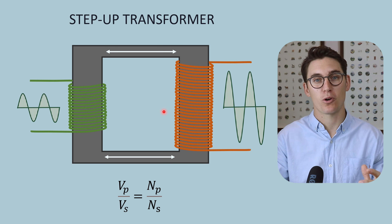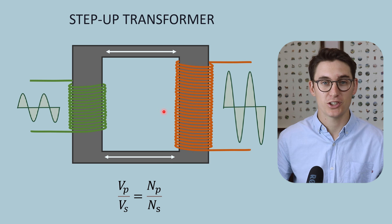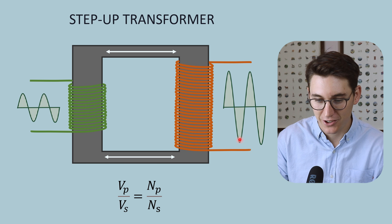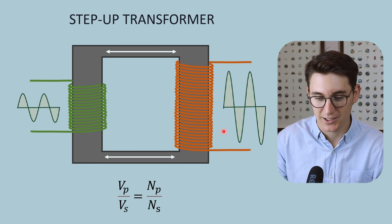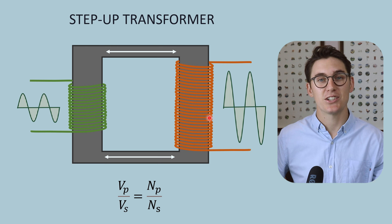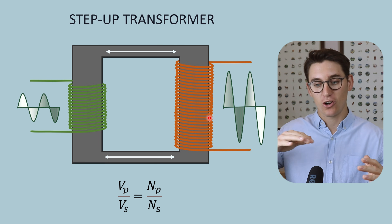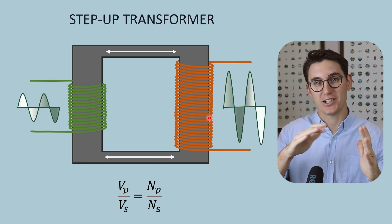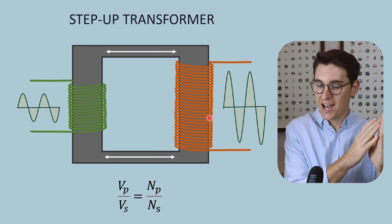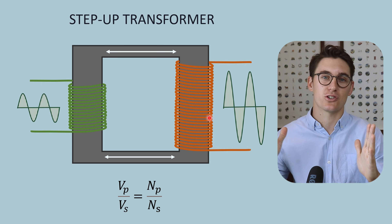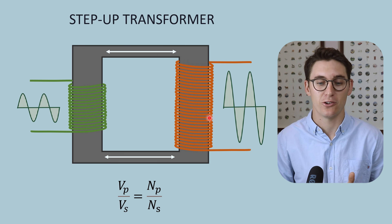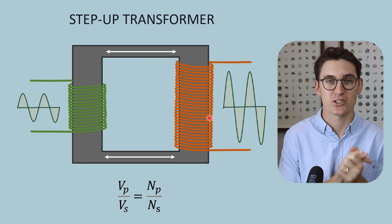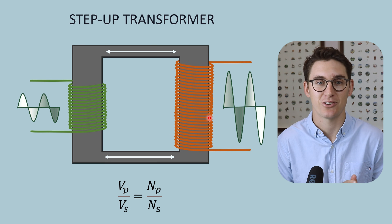We still have a problem — we've increased our voltage to the required levels, but the current is still alternating. We now need to rectify that current, converting it to direct current, and then use a generator to smooth it out so we get a constant flow of electrons from cathode to anode. That is the primary function of the secondary circuit, which we'll look at in the next talk.